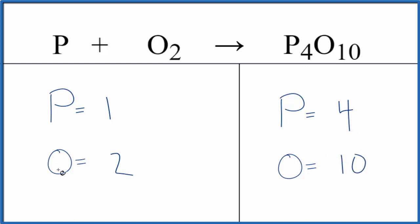So we could balance the oxygen. All we have to do is put a five in front of the O2. Two times five, that would give us ten. So those are balanced.